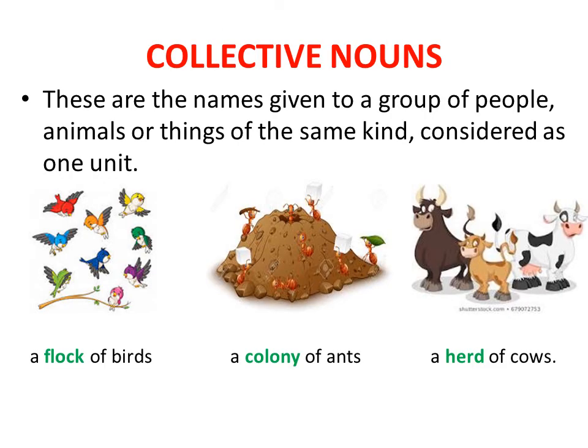Now let's start with collective nouns. These are names given to a group of people, animals, or things of the same kind considered as one unit. For example, a flock of birds — when you see lots of birds together, you call them a flock. Similarly, lots of ants together is a colony of ants, and lots of cows is a herd of cows. So flock, colony, and herd are all collective nouns.